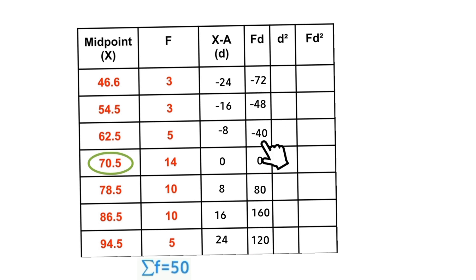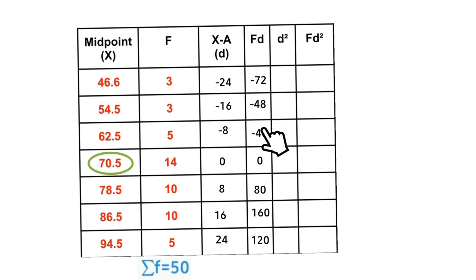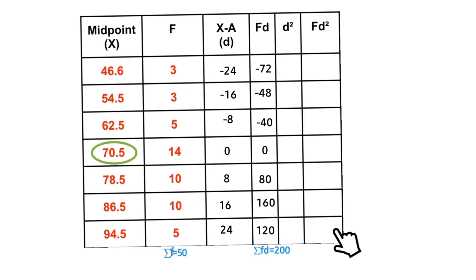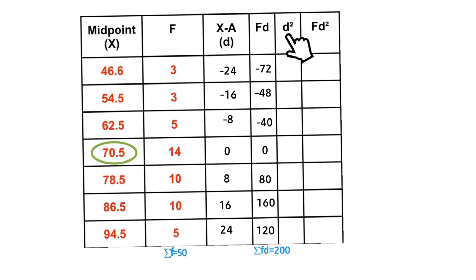The next step is to get the summation of all the fd values: −72 + (−48) + (−40) + 0 + 80 + 160 + 120 = 200. Now we move to the d² column — d² simply means the square of the d values.